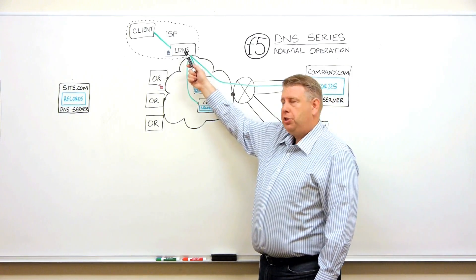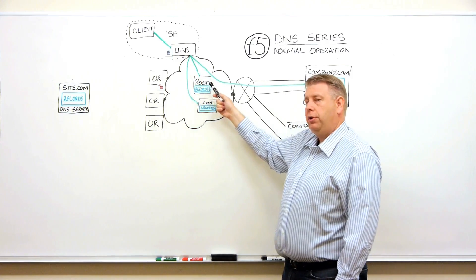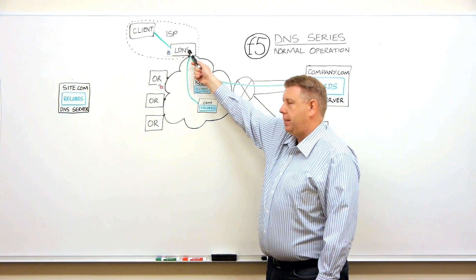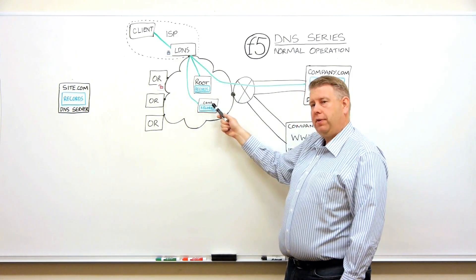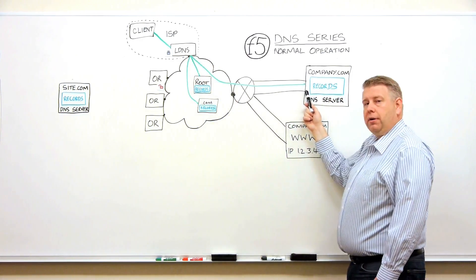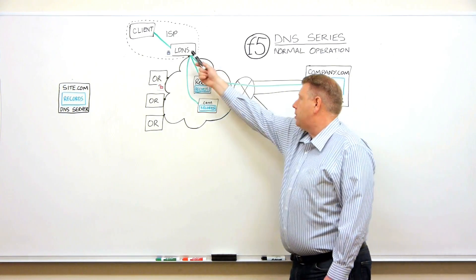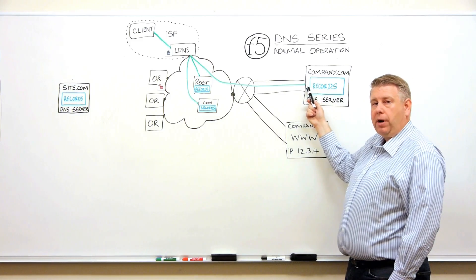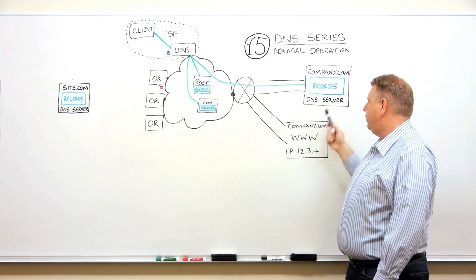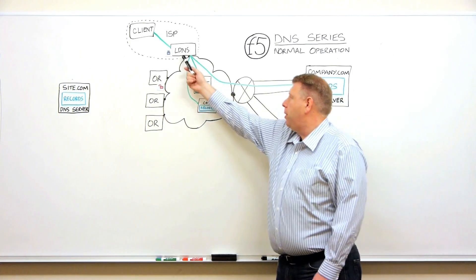So following this chain, the client to the local DNS server, local DNS server to the root server, back gets the address for the .com server. Now the local DNS server has the address for the server representing company.com. Now the local DNS server is actually able to ask for the record for the IP address of www.company.com. So it responds with the appropriate IP address.